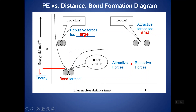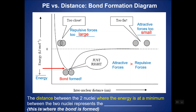We can also find the bond length from this diagram: the x-axis is internuclear distance, and by going across to the energy dip and reading the x-value, we get the bond length. The distance between the two nuclei at the energy minimum is the bond length.